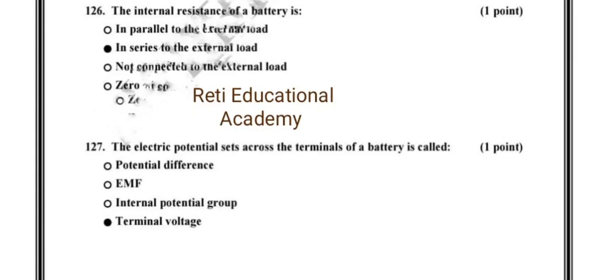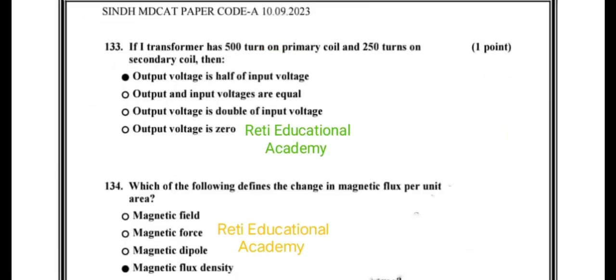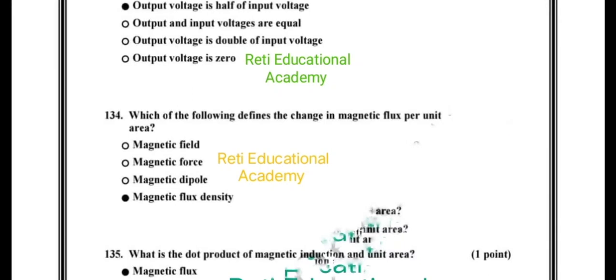Question number 133: If a transformer has 500 turns on primary coil and 250 turns on secondary coil, then the correct option is output voltage is half of input voltage. Question number 134: Which of the following defines the change in magnetic flux per unit area? The correct option is magnetic flux density.